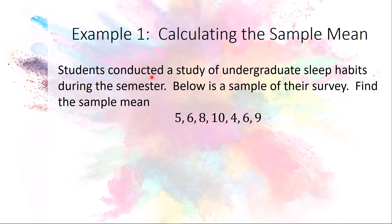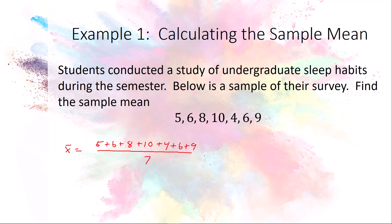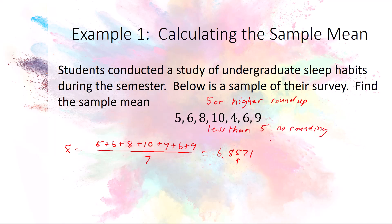Here's our first example. Students conducted a study of undergraduate sleep habits, and we need to find the sample mean from a sample of seven data elements. The sample mean equals the sum of those data elements divided by seven, giving 6.8571... Since the data has no decimal places, we round to one decimal place. Looking at the hundredths digit — which is 5 or higher — we round up to 6.9.